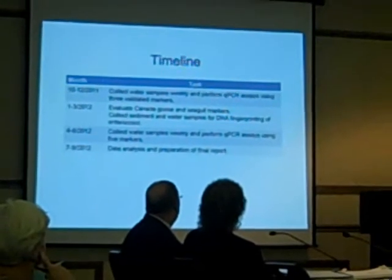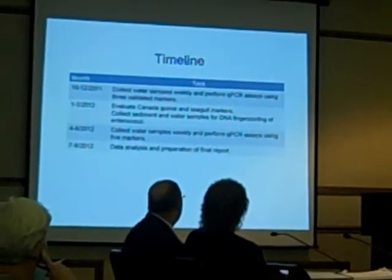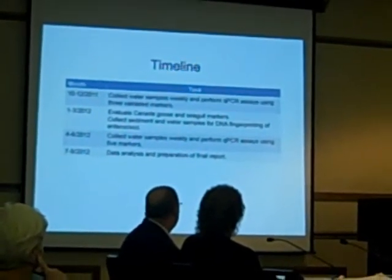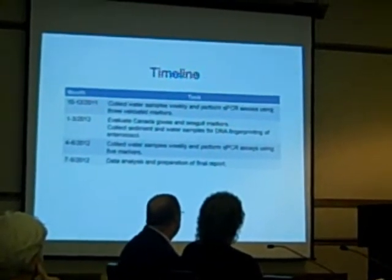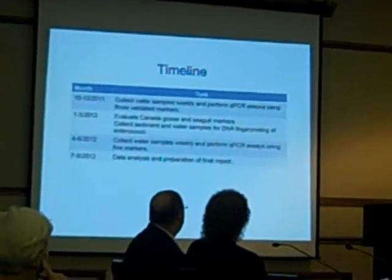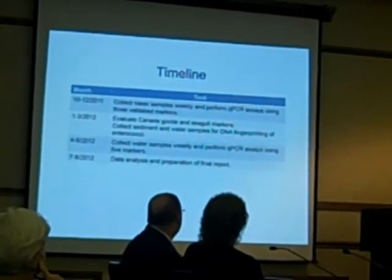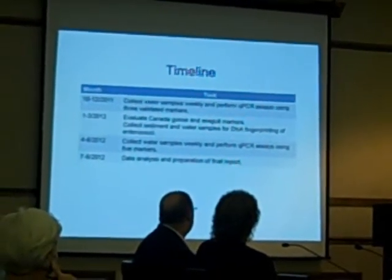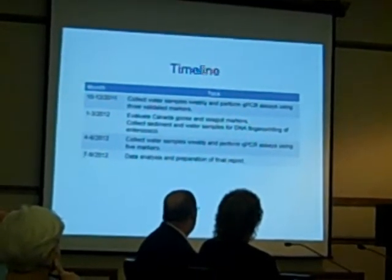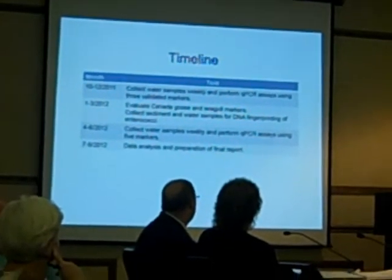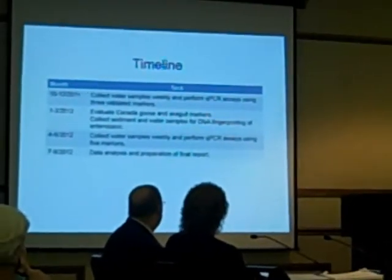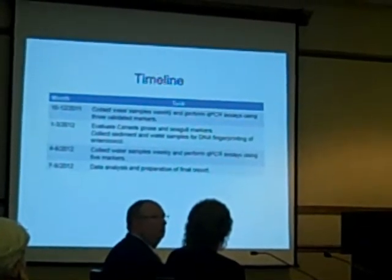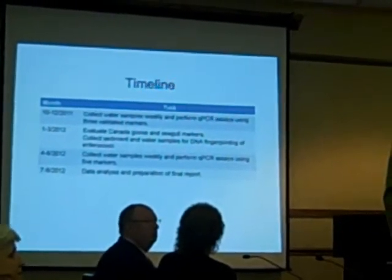The time schedule is as follows: for the first three months of the study, we're going to monitor three validated markers that we currently have. The next three months we'll be validating two more markers — the Canada goose and the seagull markers — and we will also develop DNA fingerprints of enterococci. Then for the following summer, we'll be collecting water samples and using all five validated markers to conduct a full-scale study. The last three months will be data analysis and providing the final report for the city.